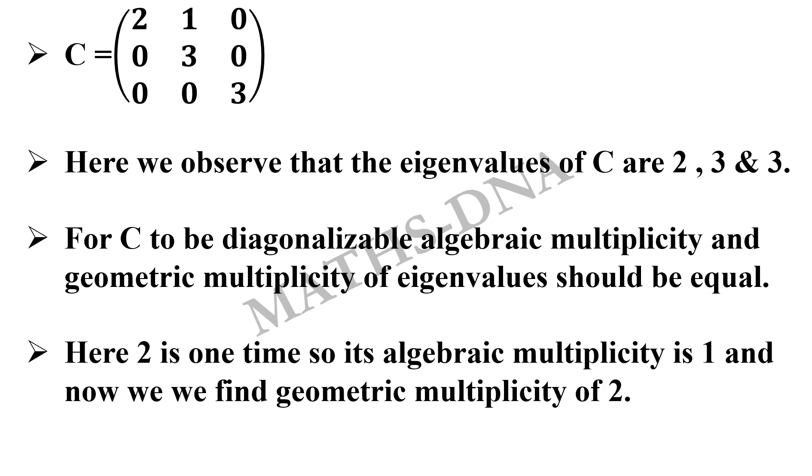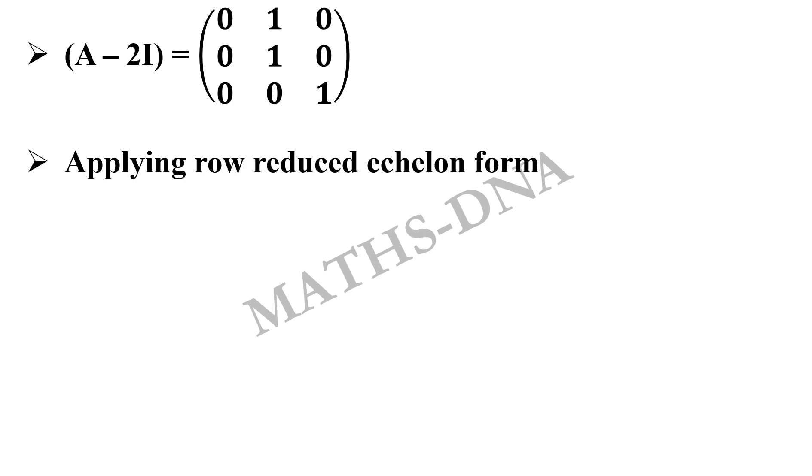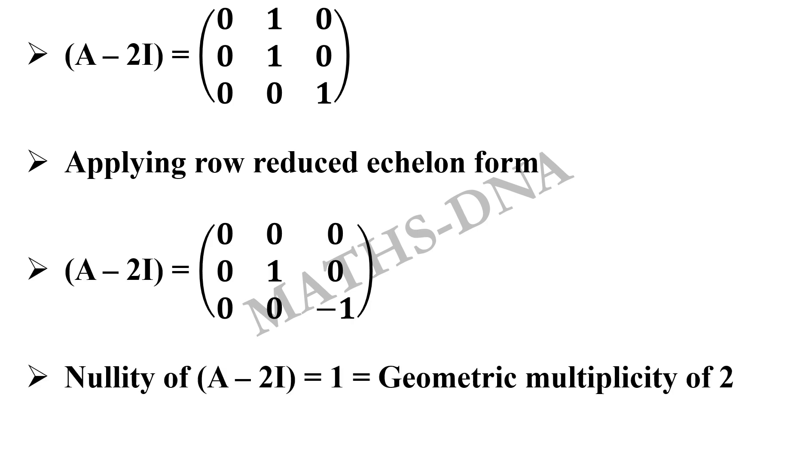Using the same result again, we find the geometric multiplicity of 2. The geometric multiplicity will be defined by the same process A minus 2I and then applying row reduced echelon form and then finding the nullity of A minus 2I which is equal to 1 which is nothing but the geometric multiplicity of 2. So algebraic multiplicity is equal to the geometric multiplicity for eigenvalue 2.